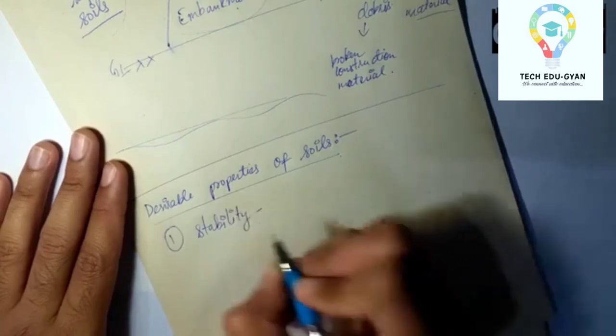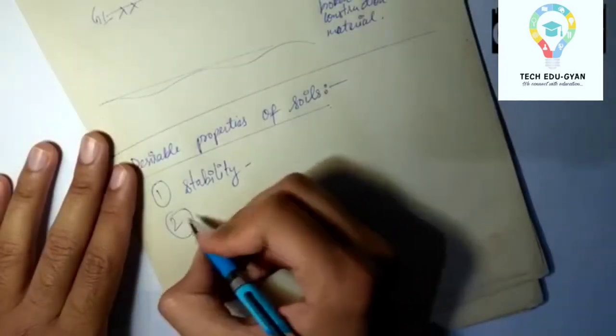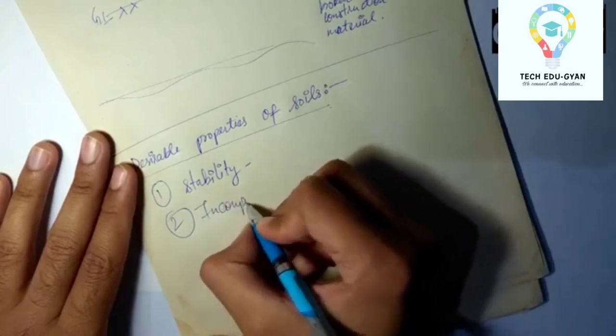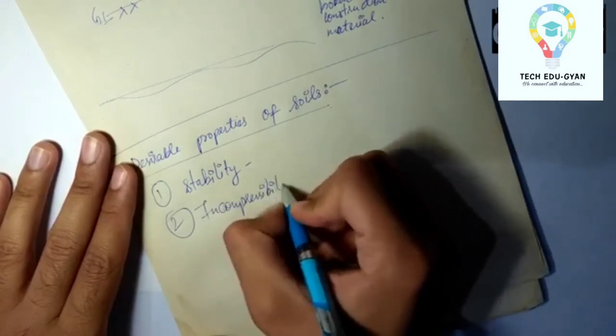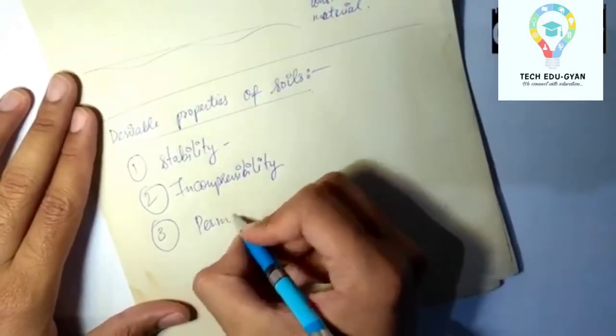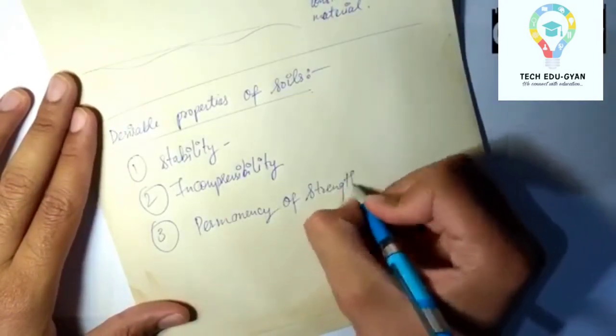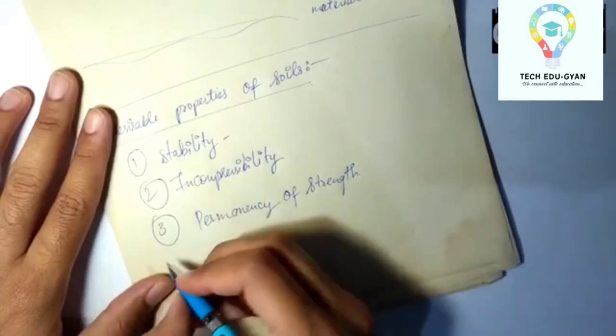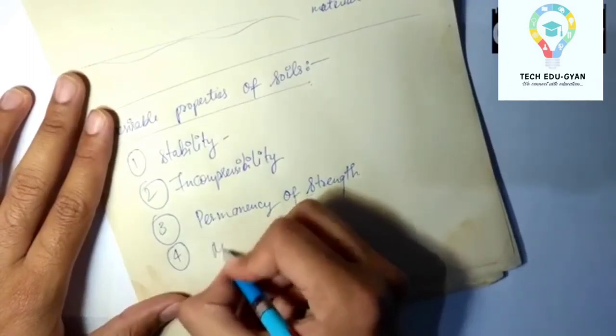Second one is incompressibility. Our soil should not be compressible under heavy loading. Our next point is permanency of strength. The strength should be permanent and uniform throughout its lifespan. Our fourth point is minimum changes can be accepted.